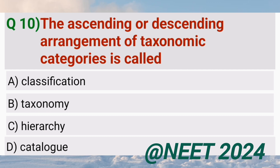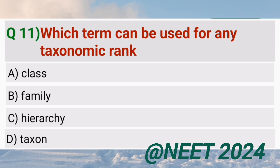The ascending or descending arrangement of taxonomic categories is called hierarchy. Which term can be used for any taxonomic rank? Taxon.